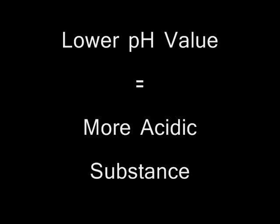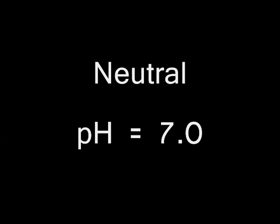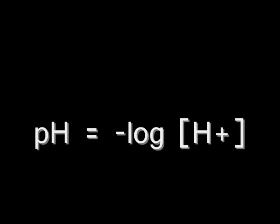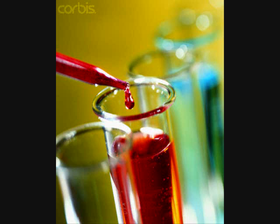The lower the pH value is, the more acidic the substance is. The higher the value, the more basic. A pH value of 7 indicates a neutral substance. The value of pH can be found using a mathematical formula: pH equals the antilog of the hydrogen ion concentration of a solution. Because the scale is logarithmic, a change of 1 degree of pH, such as 5 to 4, indicates a difference of 10 times the acidity of a substance.